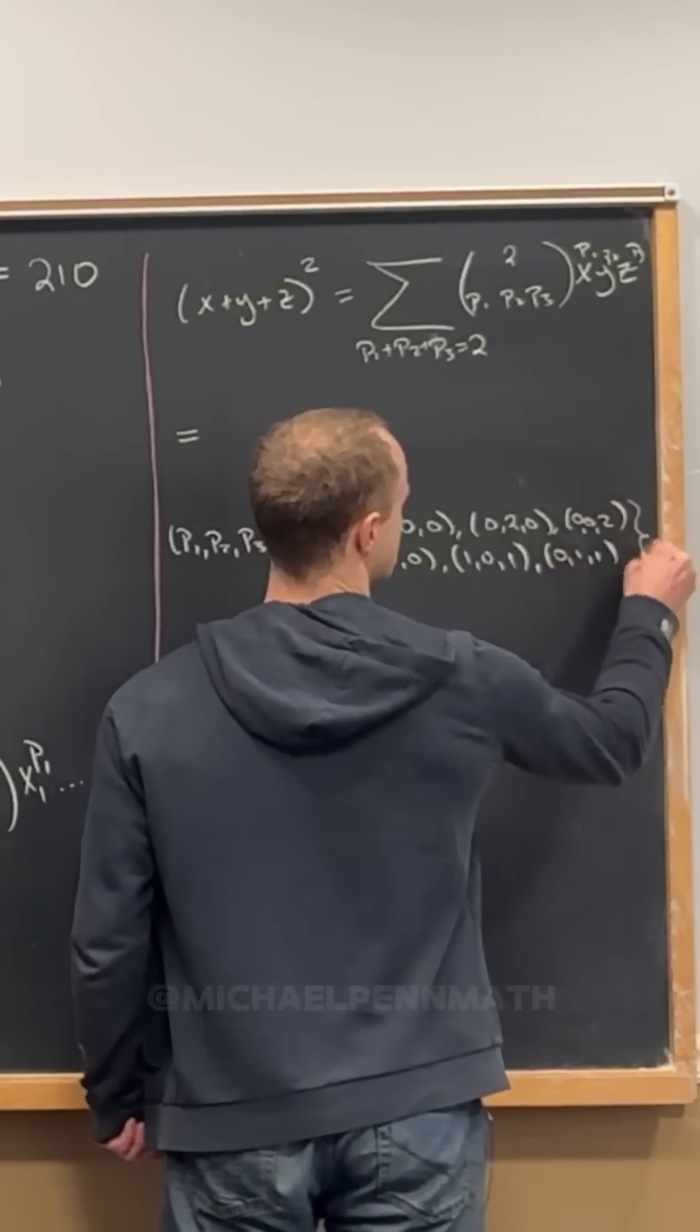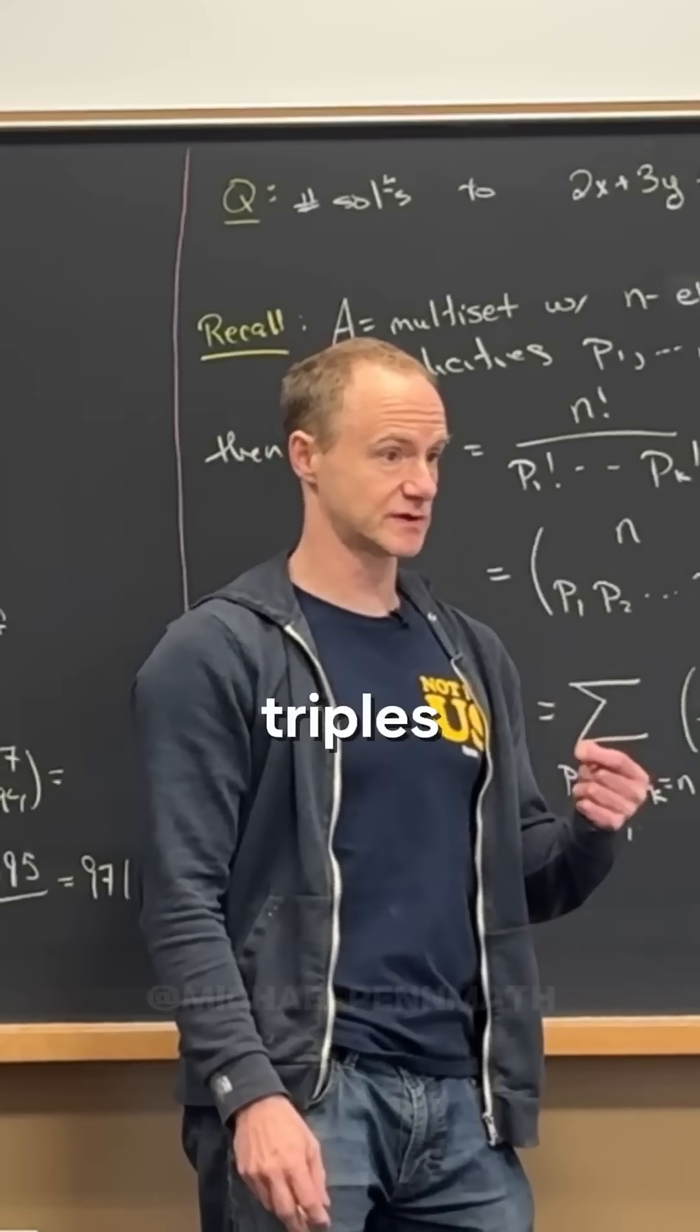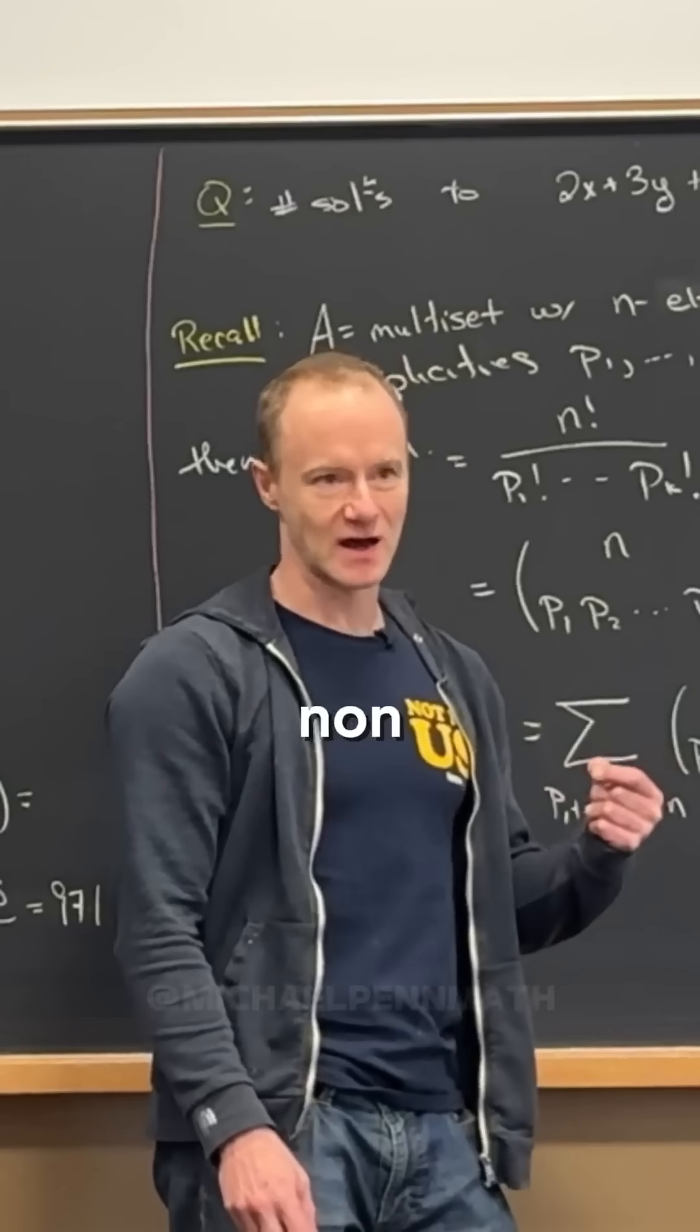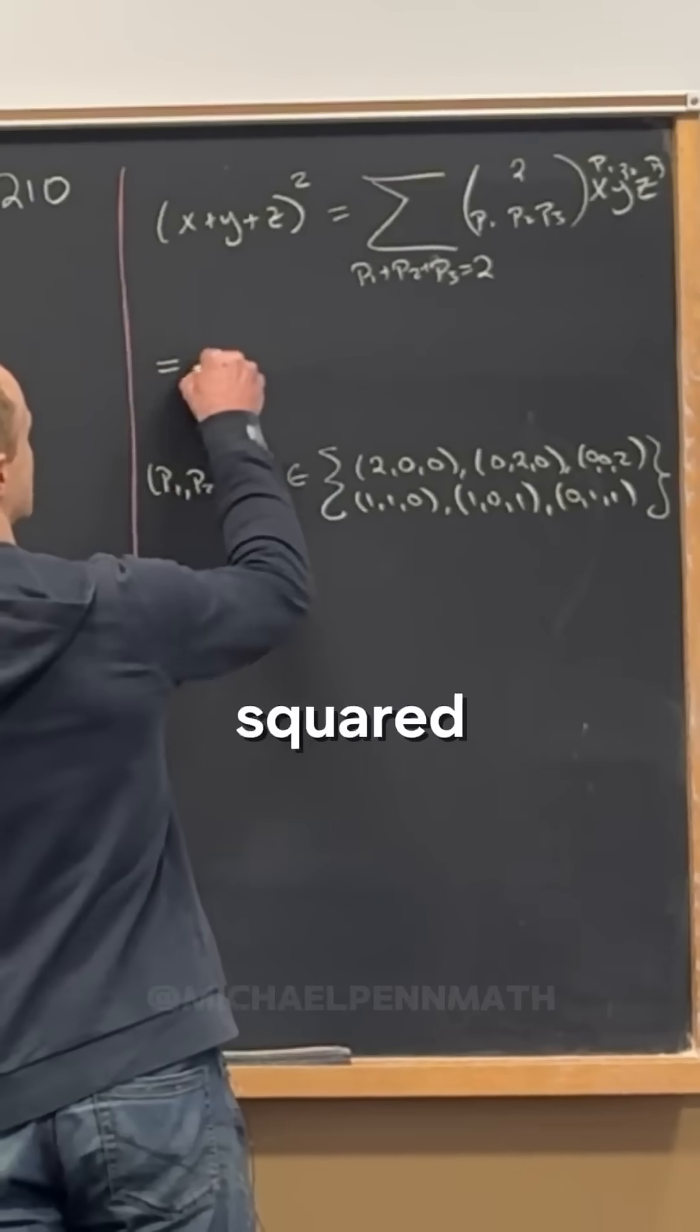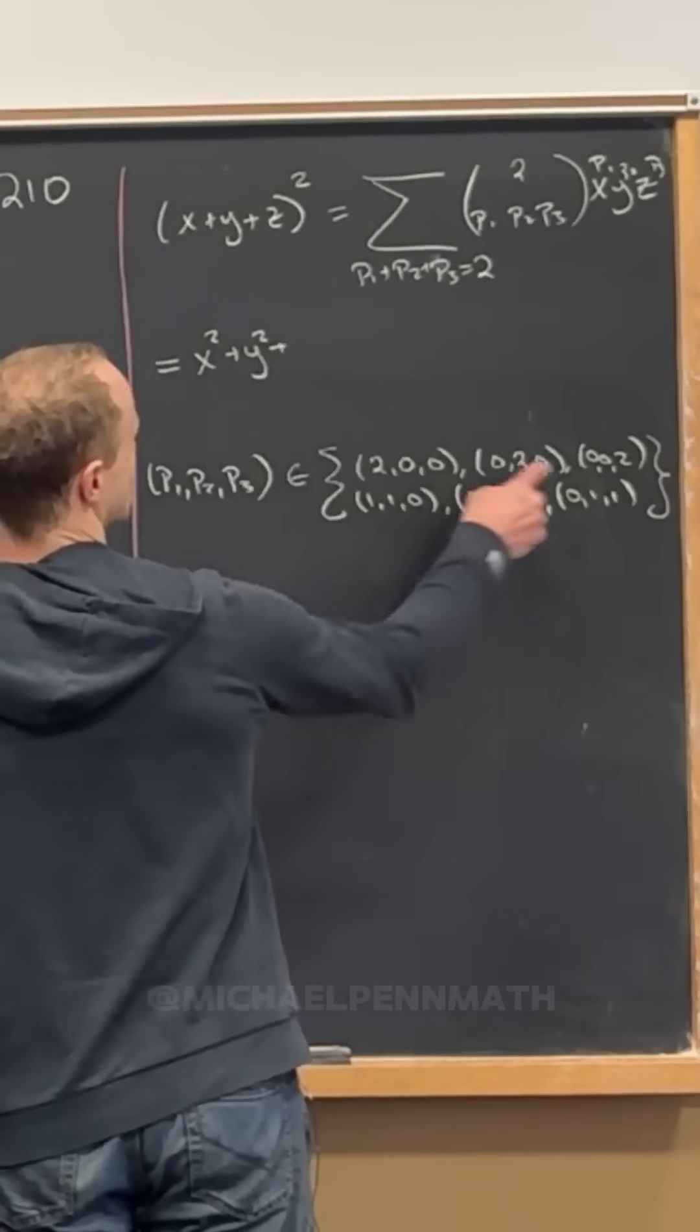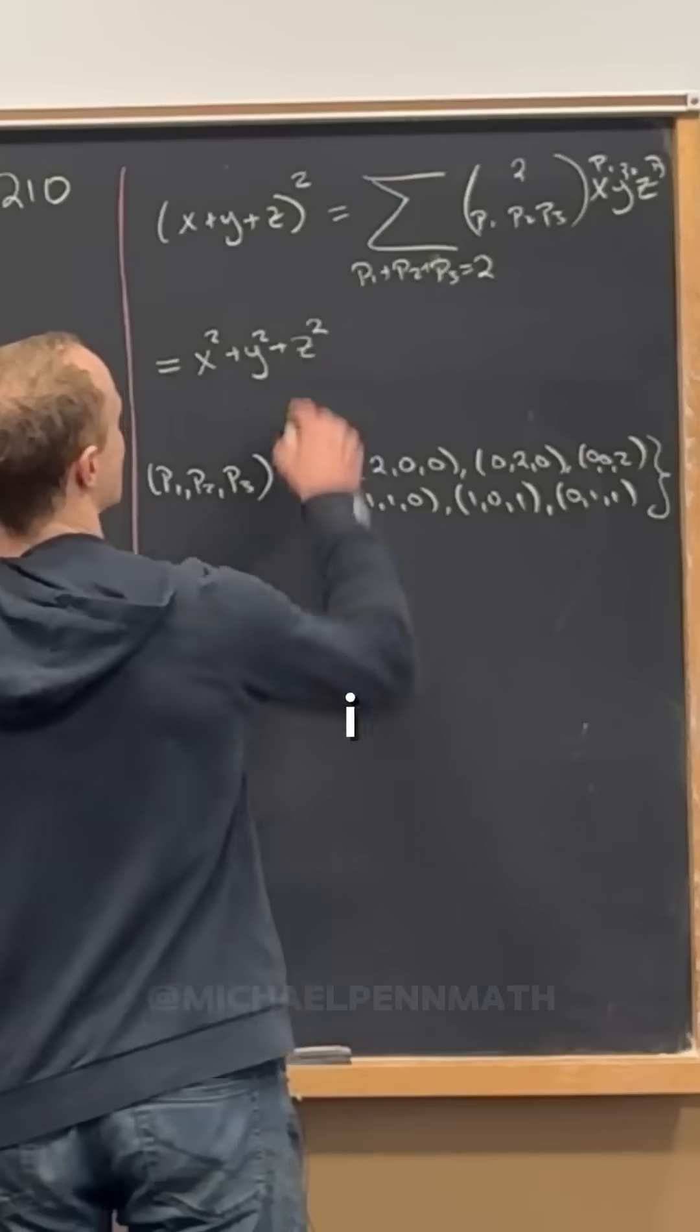So those are all of the ordered triples of non-negative integers where their sum is 2. What's this one correspond to? This first one, that's x squared. The second one is y squared. This third one is z squared.